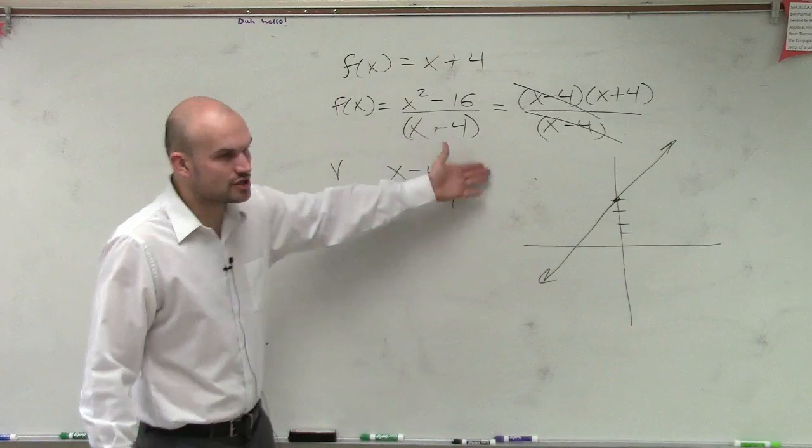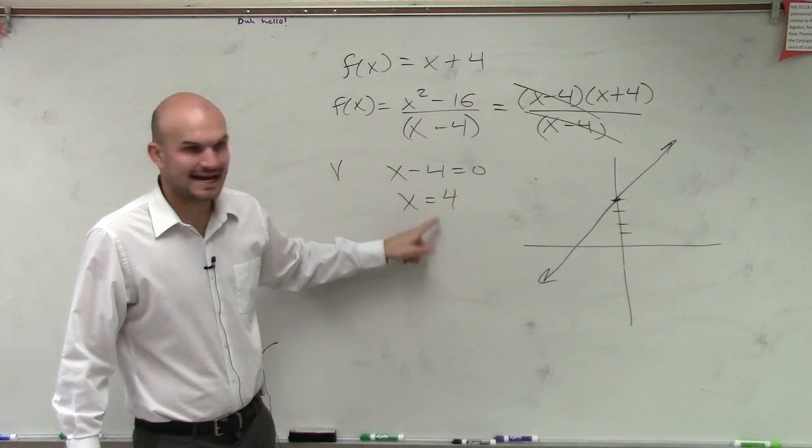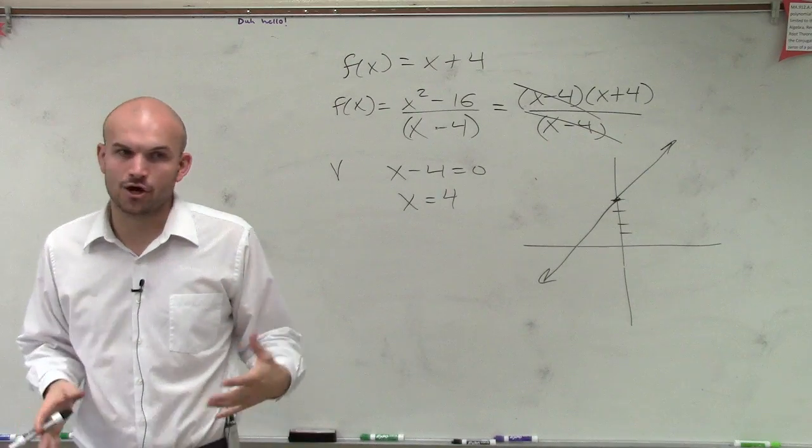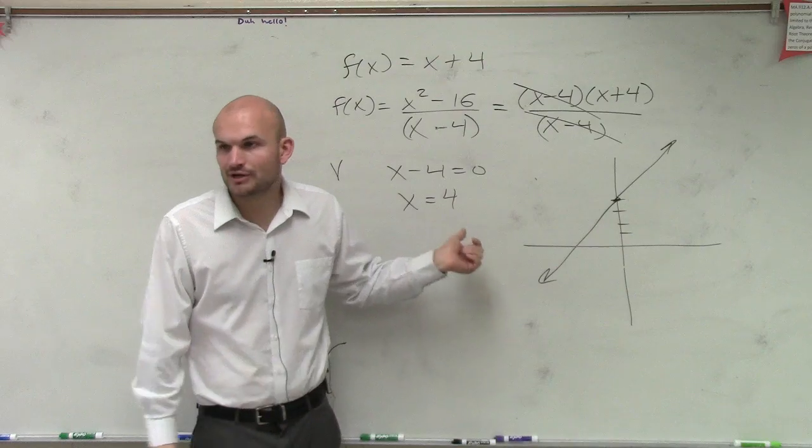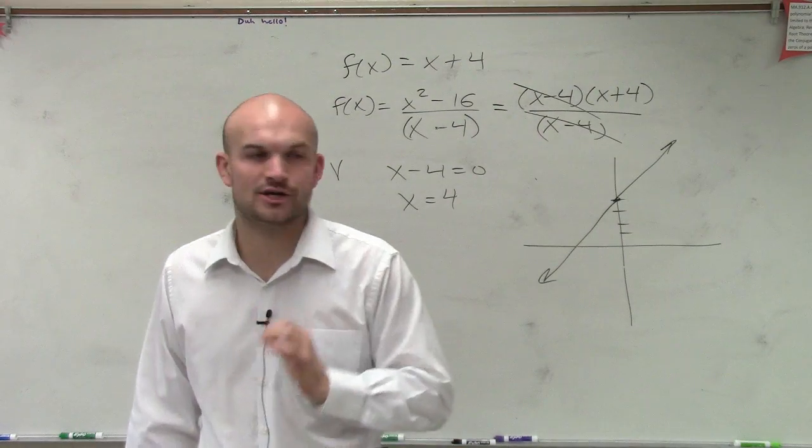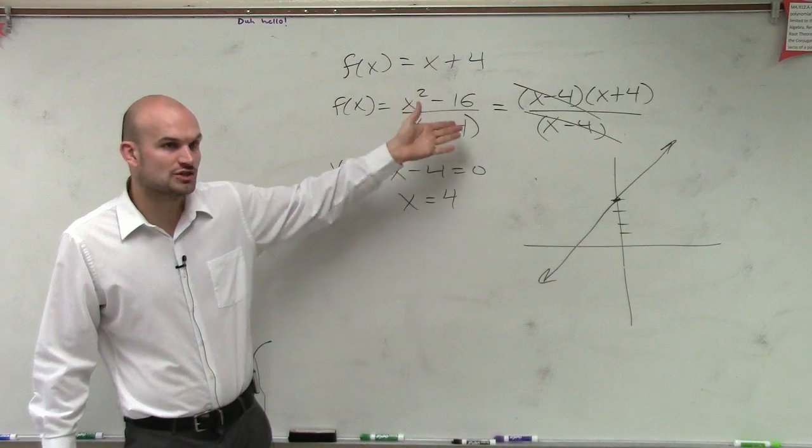But then you say, Mr. McLogan, the original problem is written like this. We know there's an asymptote at x equals 4. Well, ladies and gentlemen, when we can simplify our polynomial, this is no longer an asymptote. However, it is a point of discontinuity, meaning this point is still not part of our function.